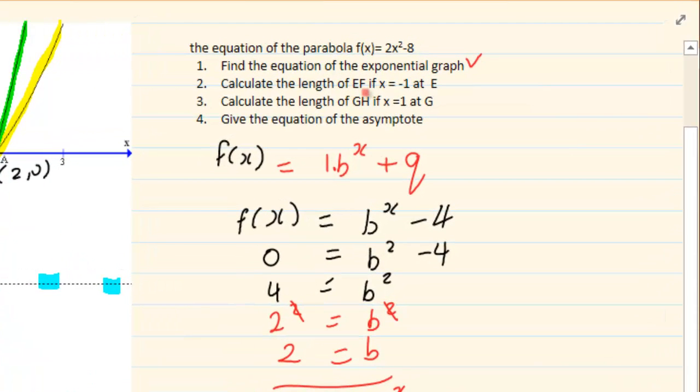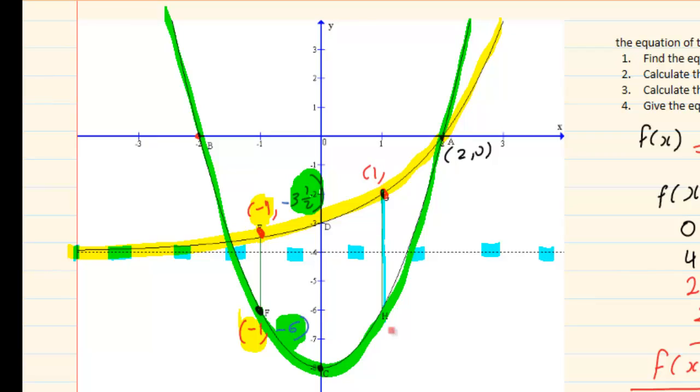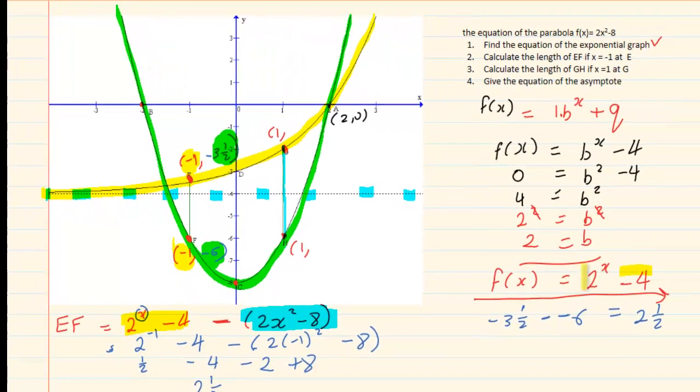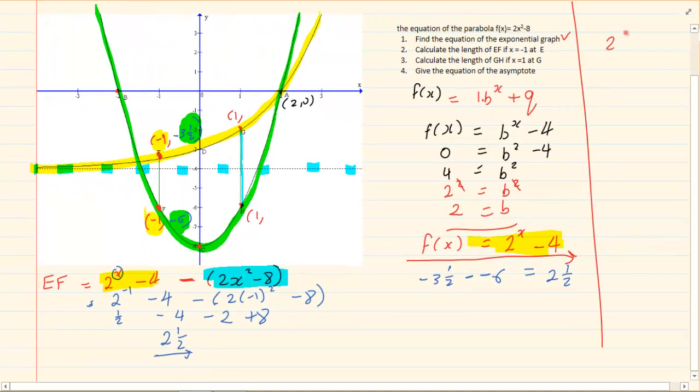Now let's look at the next one. Calculate the length of GH if x is equal to 1. So now we have that this point x is 1. And right here at H we also have that the point is x. So if I want to get the y I'm going to take my 1 and substitute it into my exponential graph which is 2 to the power of x minus 4. So I have 2 to the power of 1 minus 4 which equals to minus 2.